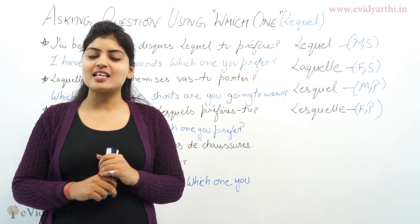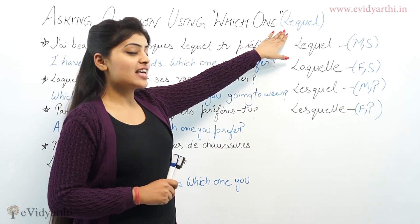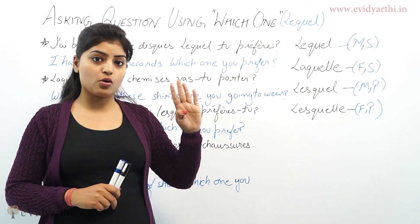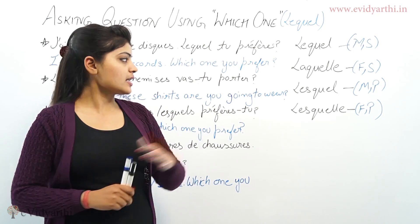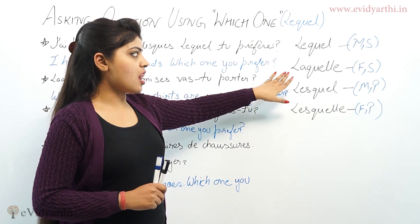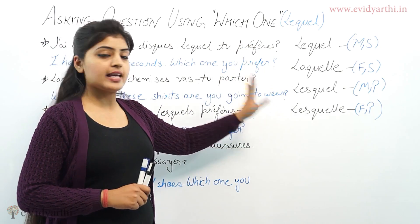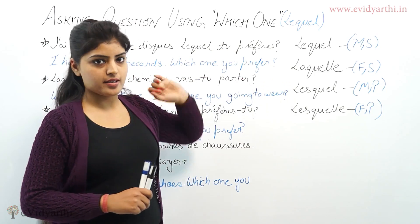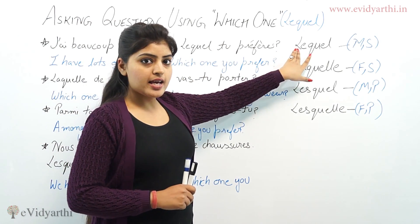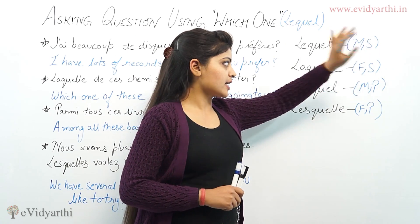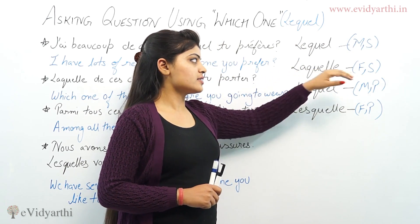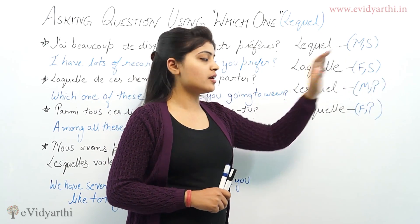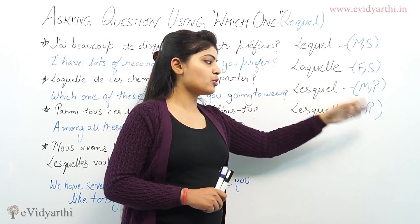In French, 'which one' is expressed using four forms: lequel, laquelle, lesquels, and lesquelles. These come in similar pairs — lequel is used for masculine singular, laquelle for feminine singular, lesquels for masculine plural, and lesquelles for feminine plural.